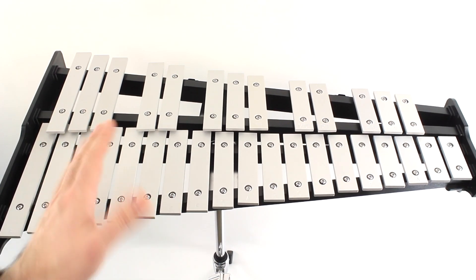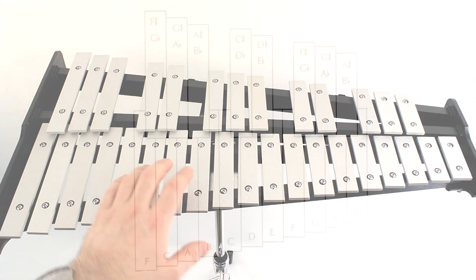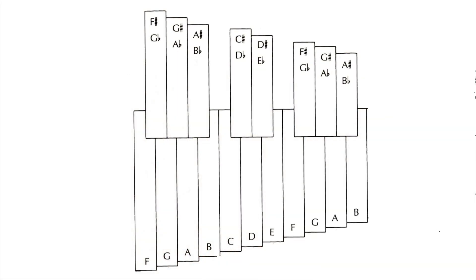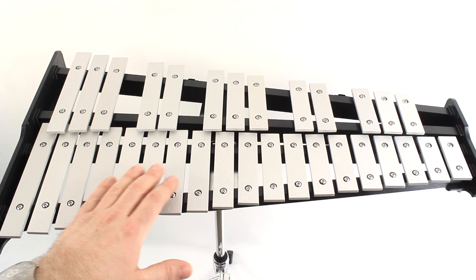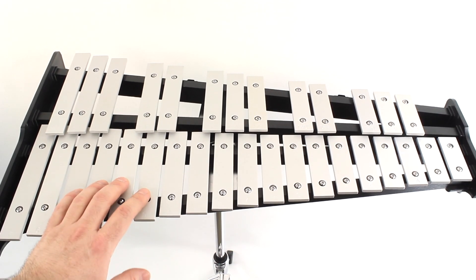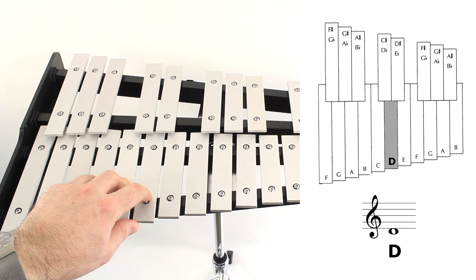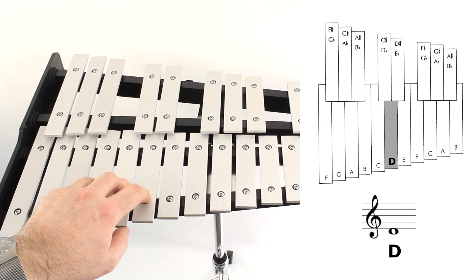When we're learning new notes on the bells, we'll be using something called a note chart or a keyboard chart. This is a picture of our bell kit that helps us to see where the different notes are, and oftentimes the new note that we're learning on our note chart will be highlighted or colored in.